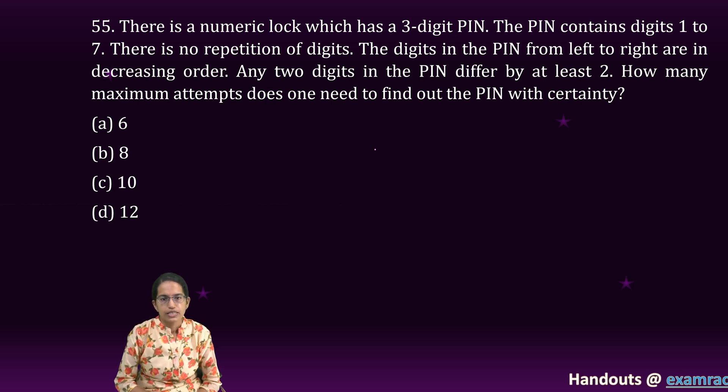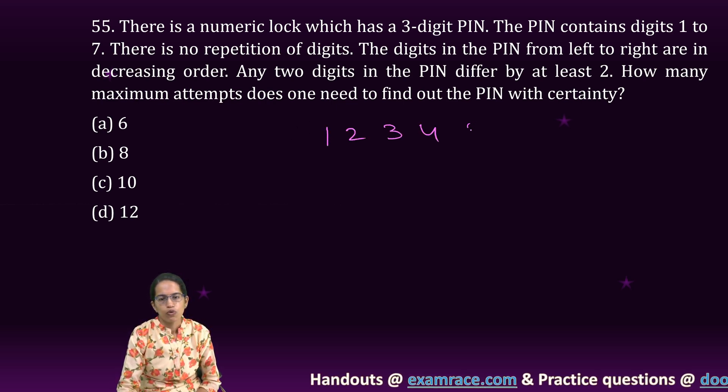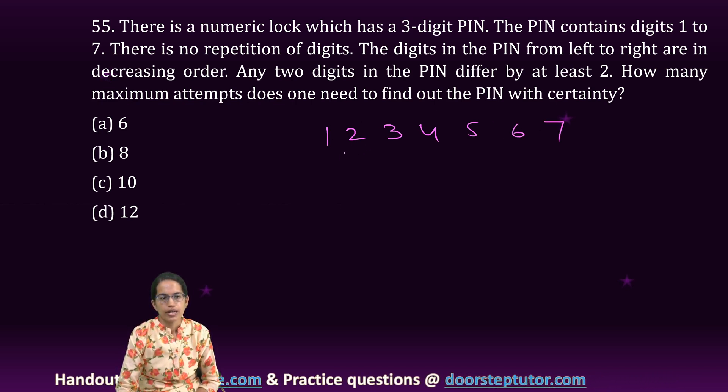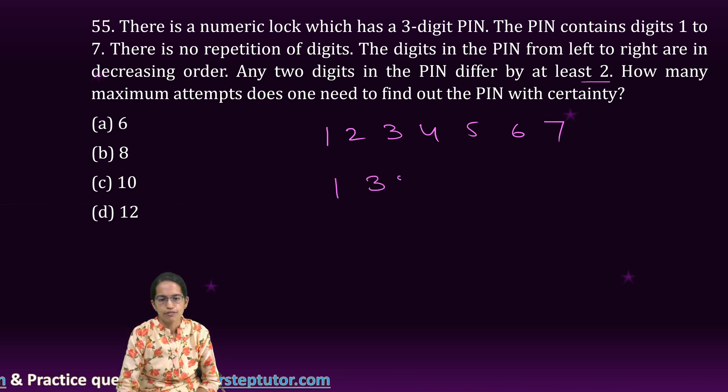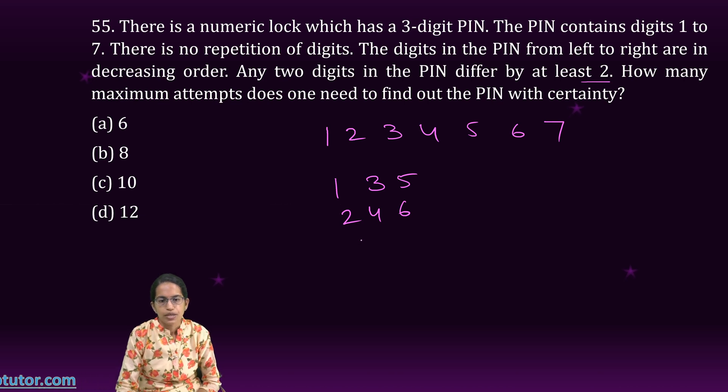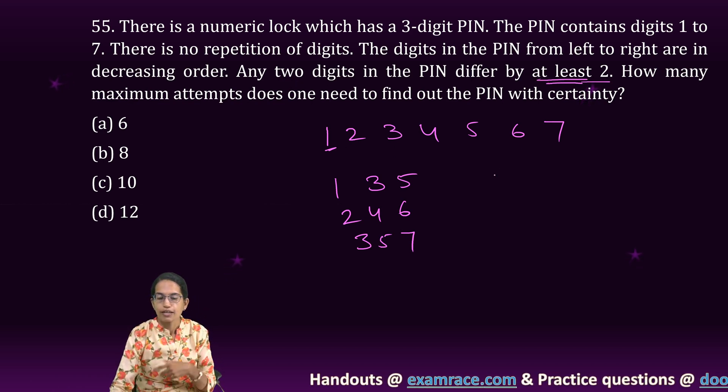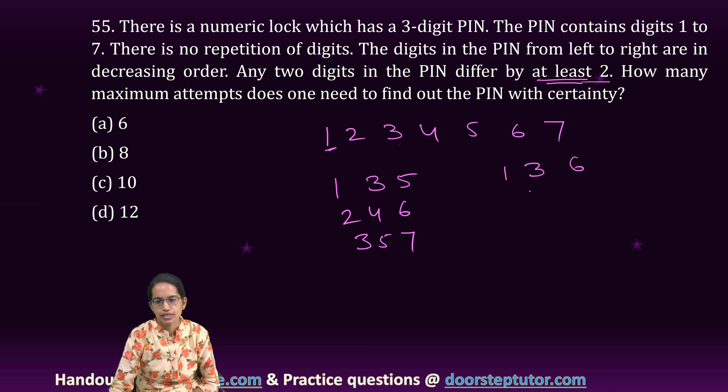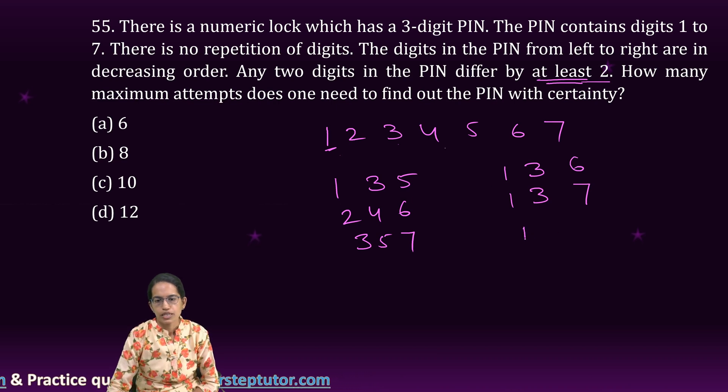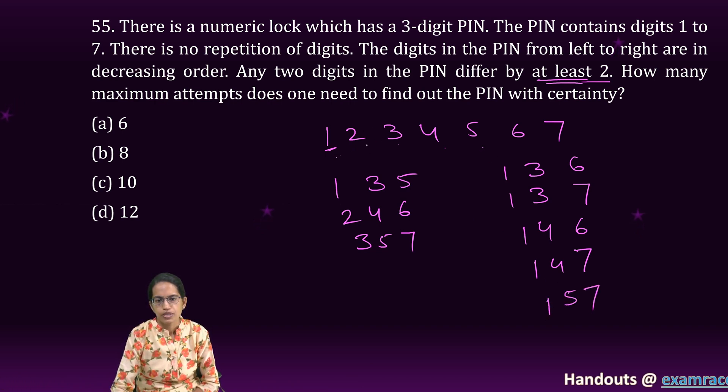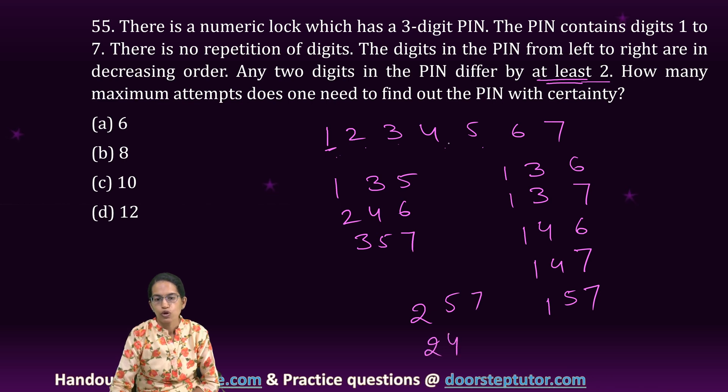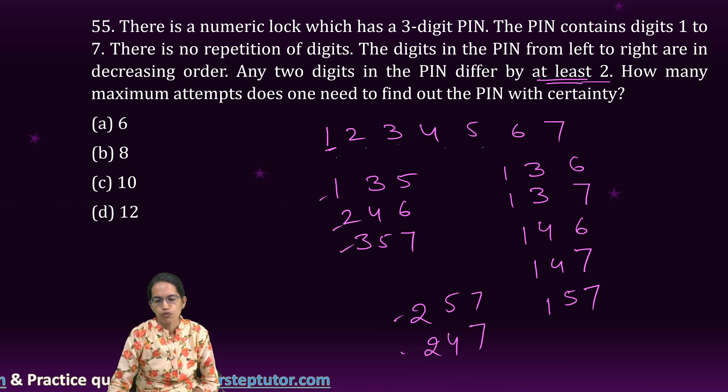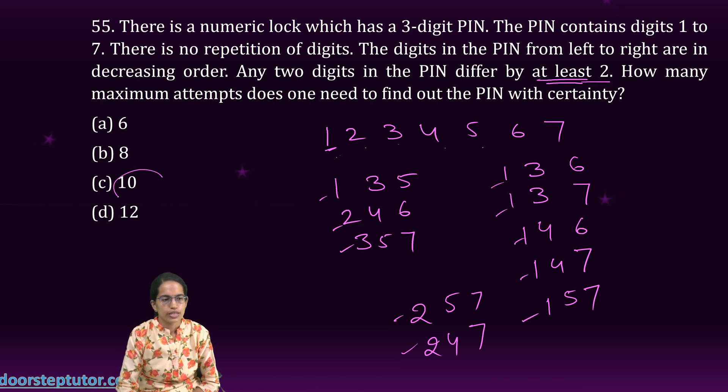Now there is a numeric lock which is three digit pin. There is the numbers 1, 2, 3, 4, 5, 6 and 7. The digits are from left to right. Any two digits differ by at least two. So it could be 1, 3, 5. It could be 2, 4, 6. It can be 3, 5, 7. That's the most easiest combination. Now with 1, it has to be at least two digits. It can be more than two. So I take a combination of 1, 3 and then 6. I take a combination of 1, 3 and 7. Then I take a combination of 1, 4 and 6. 1, 4 and 7. Then I take a combination of 1, 5. So it would be 1, 5, 7. Then I take a combination of 2, 4, 6 is already done. So I take 2, 5, 7 and I take 2, 4 and not 6 but 7. So 1, 2, 3, 4, 5, 6, 7, 8, 9 and 10. So 10 combinations are possible here.